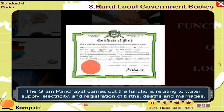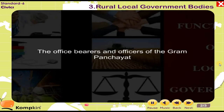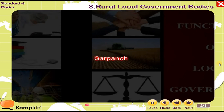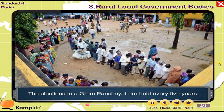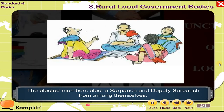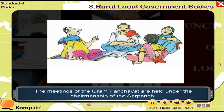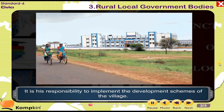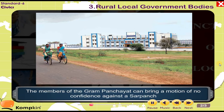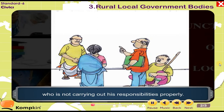Elections to a Gram Panchayat are held every five years. The elected members elect a Sarpanch and deputy Sarpanch from among themselves. Meetings of the Gram Panchayat are held under the chairmanship of the Sarpanch, and it is his responsibility to implement the development schemes of the village. Members of the Gram Panchayat can bring a motion of no confidence against a Sarpanch who is not carrying out his responsibilities properly.